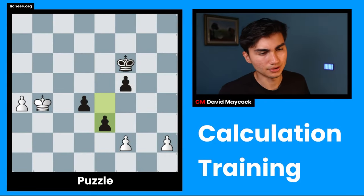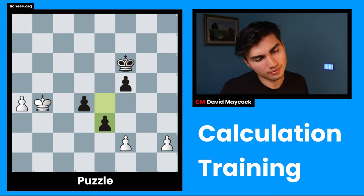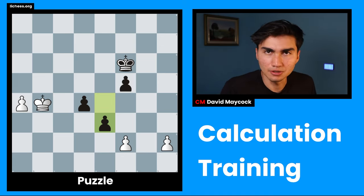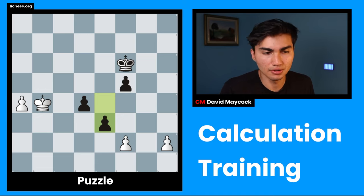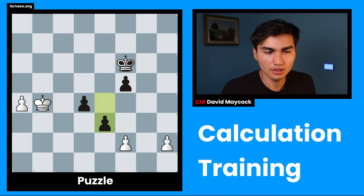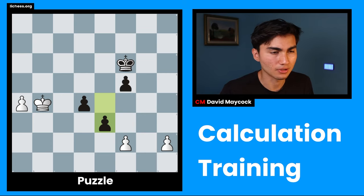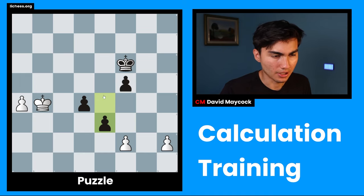So let's dive into it. As I said I haven't seen this puzzle before other than when I was getting ready to record this. And the first thing I'm going to do is evaluation. So evaluating is looking at what's the material balance, who has more points in material, king safety, piece activity, pawn structure, weaknesses. All of these things help me give some context about this position in particular.